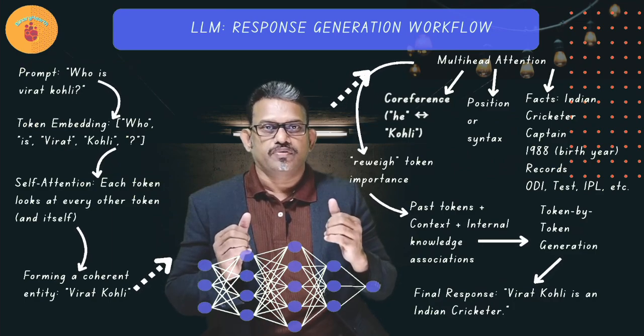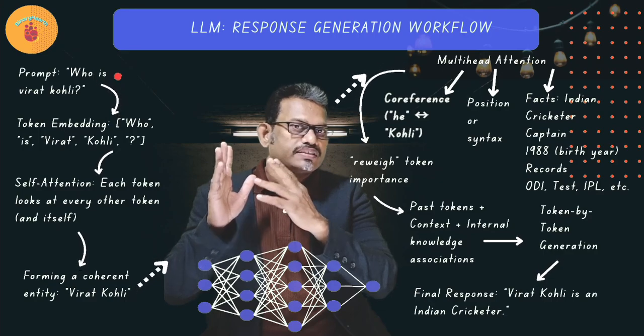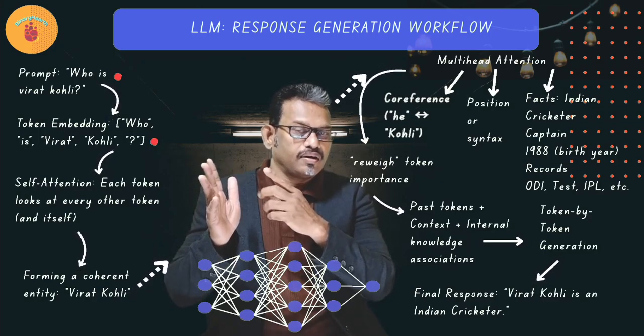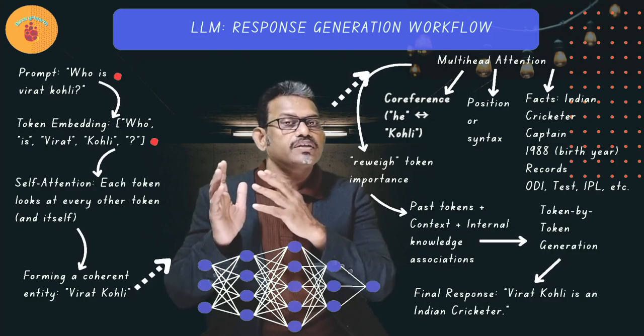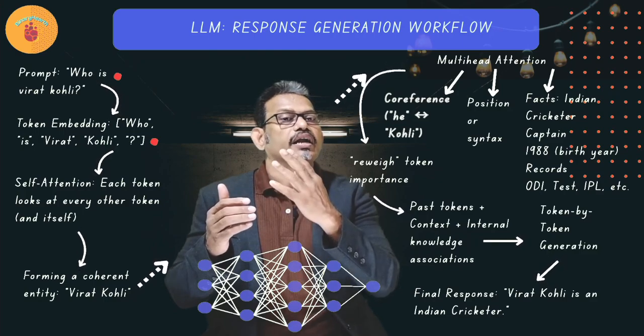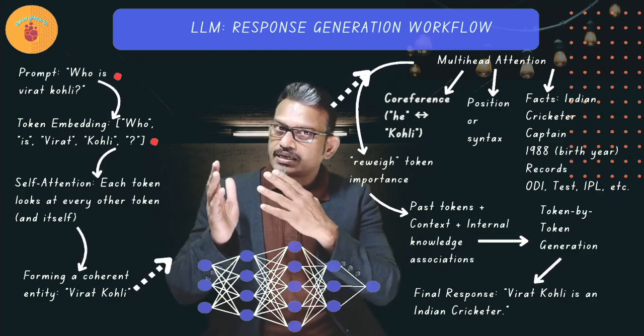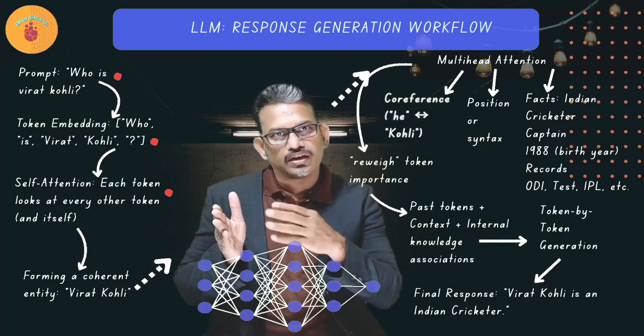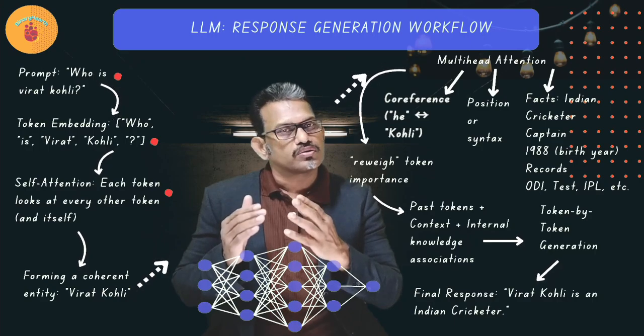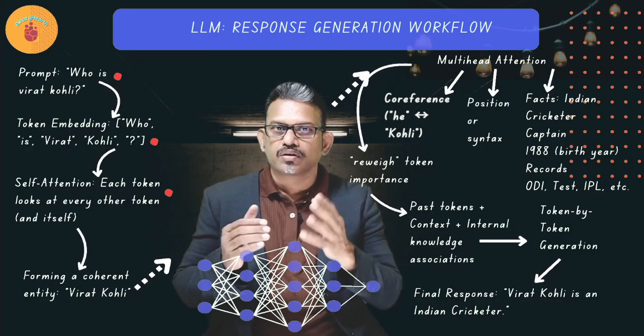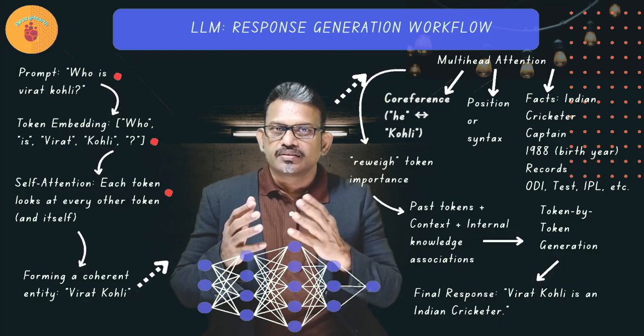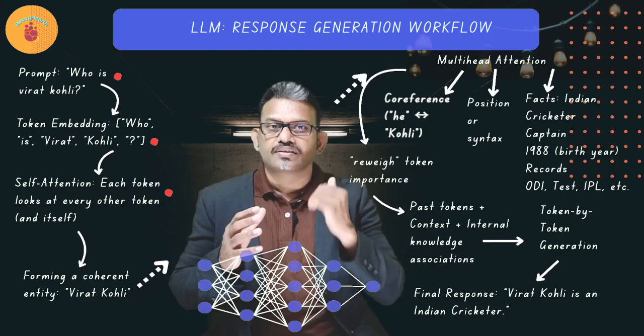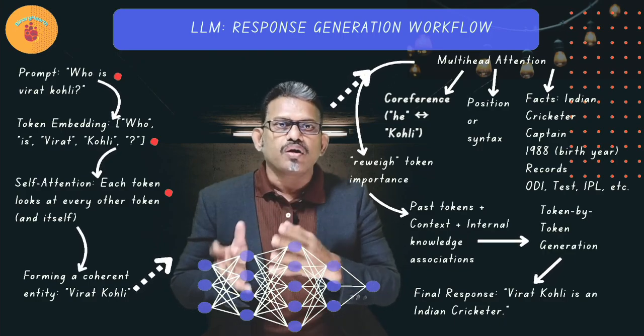Let's consider the example prompt: Who is Virat Kohli? Inference model will start with token embeddings like who, is, Virat, Kohli, question mark are embedded into high dimensional vectors. That means you got your query converted into numbers, high dimensional vectors of numbers. Then self-attention begins. In the first layer, the model applies self-attention. Each token looks at every other token and itself. It learns what to focus on based on learned weights via dot product of key, query and values. These are vectors.